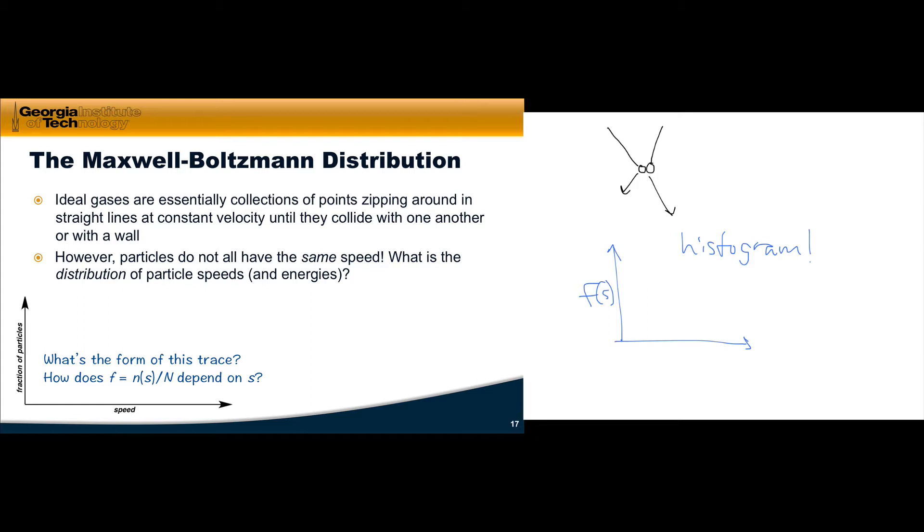The fraction of particles is equal to the number of particles with a particular speed, little n(s), divided by the total number of particles, capital N. So we're looking for the form of this histogram. What does it look like?